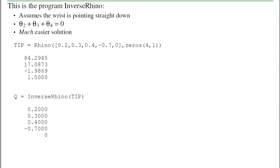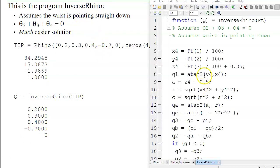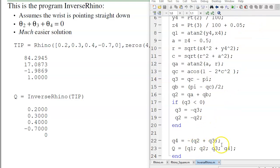That's the program inverse rhino, which is posted on Bison Academy. Given the tip position, it goes through these calculations and tells you what the joint angles are. It assumes that the tip is pointing straight down. That gives you the fourth equation. And the constraint for that is that q4 is minus q2 plus q3.